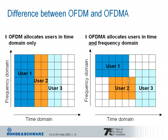The difference between OFDM and OFDMA: in OFDM, users are allocated in the time domain only — user 1 is assigned the full bandwidth, as is user 2 and user 3, and they are only separated in time. In OFDMA, users are allocated in both time and frequency domain, so user 1 and user 2 only use part of the available bandwidth and can share it. This is a very flexible scheme, and it is used in LTE because you can exploit gains of frequency-dependent scheduling, assigning users to bandwidth regions where they have better radio link quality.